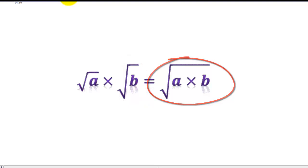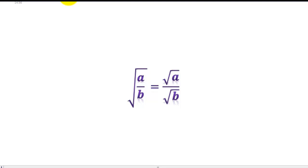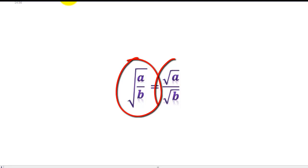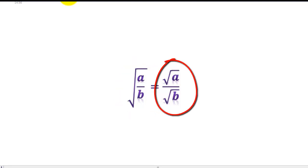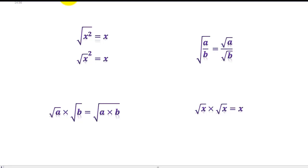Similarly, if you follow that logical rule further, you'll realise that the square root of a over b is equal to the square root of a divided by the square root of b. We'll be using these rules for the rest of our questions.